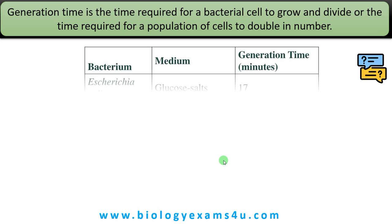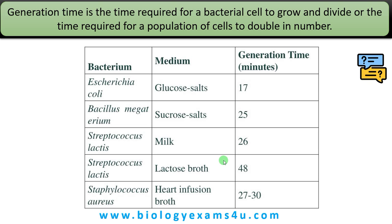Let's take some examples. In the case of E. coli growing in the medium glucose salts, the generation time is 17 minutes. That means if the initial number is 10, to double its number — that is to become 20 — 17 minutes is required.